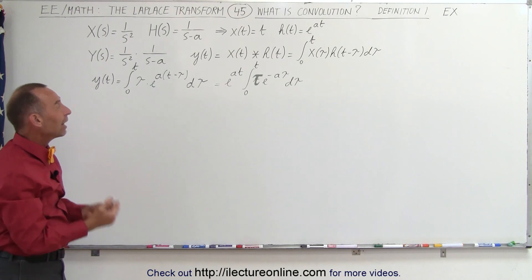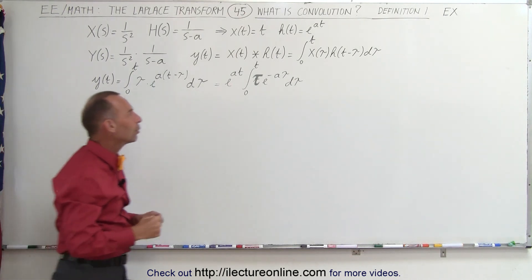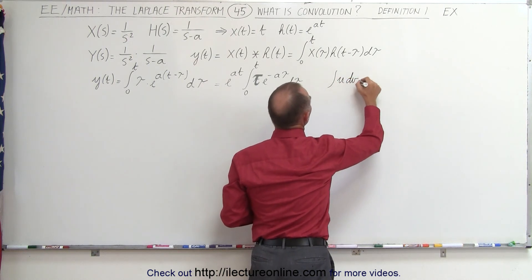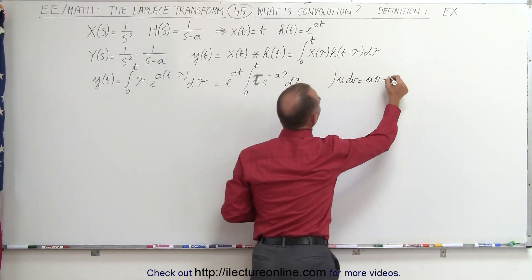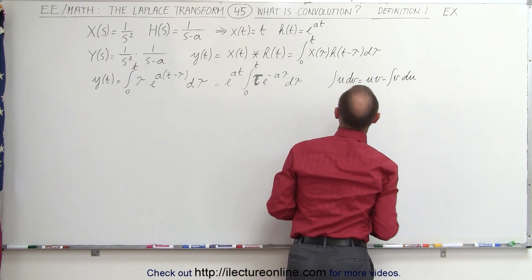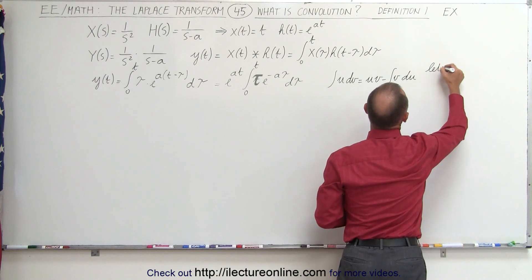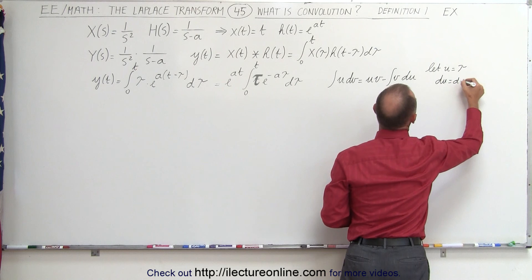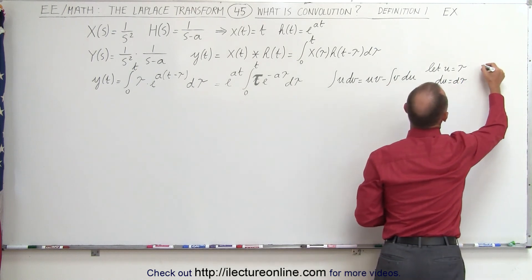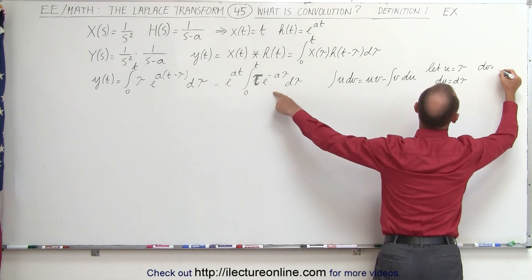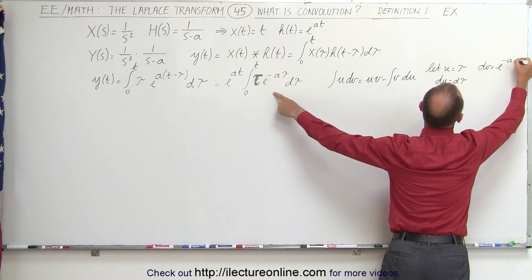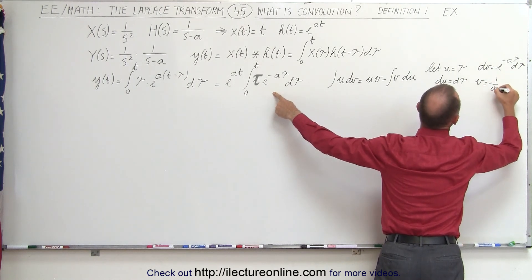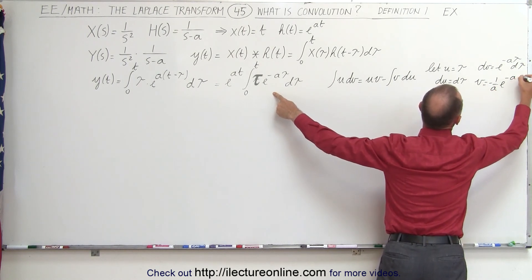Now let's go ahead and evaluate the integral. To do that, we're going to use integration by parts. We can say that the integral of u dv is equal to u times v minus the integral of v du. In this case, we're going to let u equal tau, then du equals d tau, and we're going to let dv equal e to the minus a tau d tau. That means v is going to be equal to minus 1 over a times e to the minus a tau.